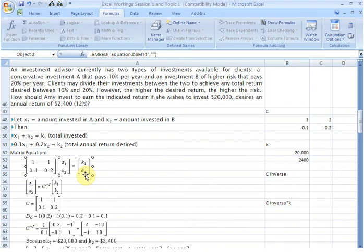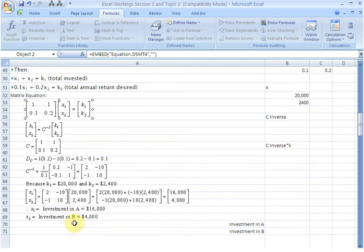So if we want to solve this system of equations for X, then the solution is given by X1 and X2 will be equal to C inverse times the K vector. And we had done that in class before and we had arrived at this answer here, X1 was equal to $16,000 and X2 was equal to $4,000.